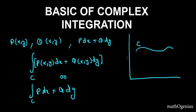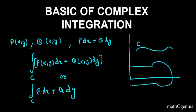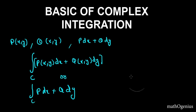For real line integration, we don't need the curve to be smooth — it can be piecewise smooth. Piecewise smooth means, for example, if you have a curve like a contour, it doesn't have to be smooth everywhere. We go from one piece to the next, integrating each segment separately. We will study about this later.